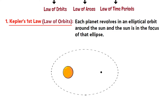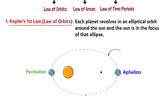The point in this ellipse where the planet is closest to the sun is called the perihelion, and the point at which the planet is farthest from the sun is called the aphelion. These elliptical orbits of the planets are responsible for the occurrence of seasons.